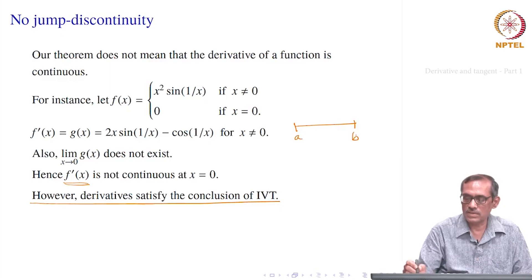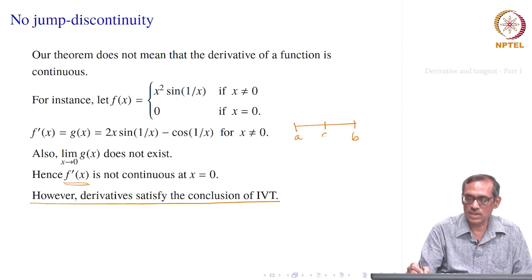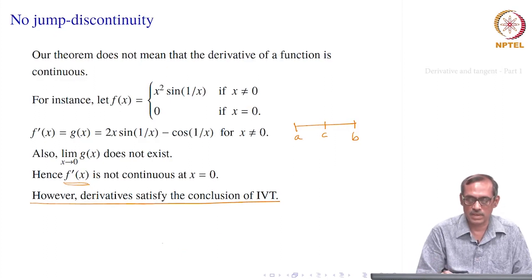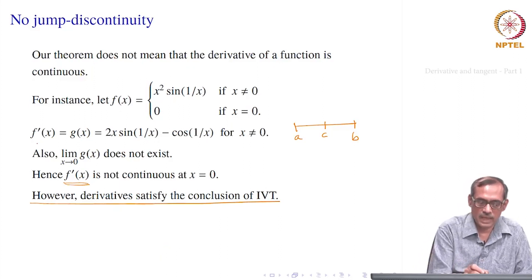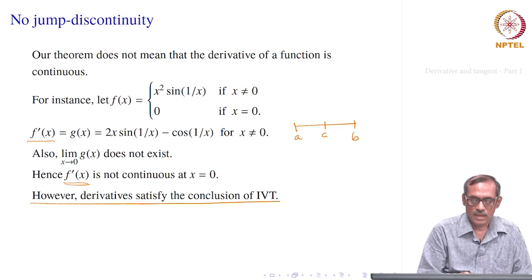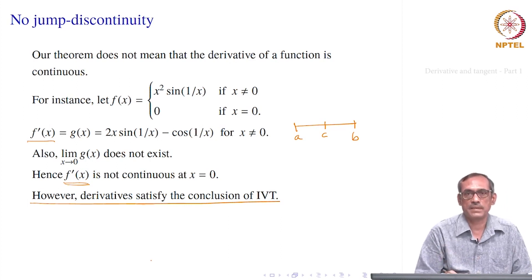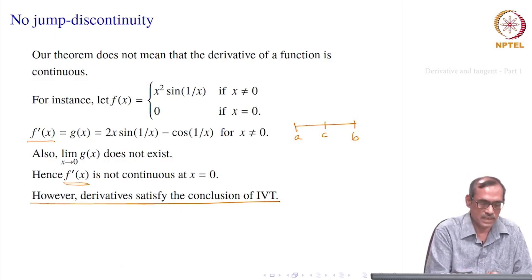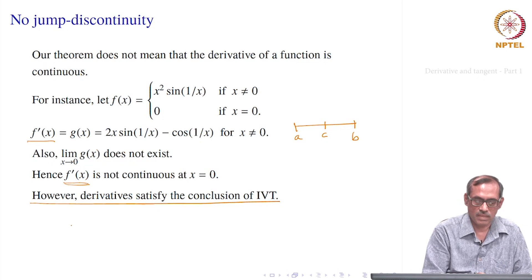The Intermediate Value Property says: on a closed interval [a, b] where the function is continuous, for any value between f(a) and f(b), there exists a point c such that f(c) equals that value. If f'(x) is a derivative function like g(x) here, it satisfies this property even though it is not continuous. So the derivative does not have jump discontinuity.